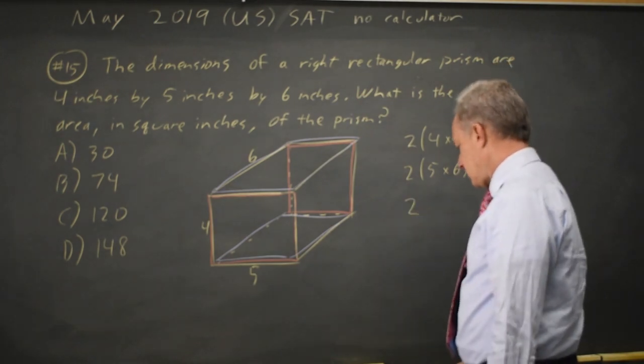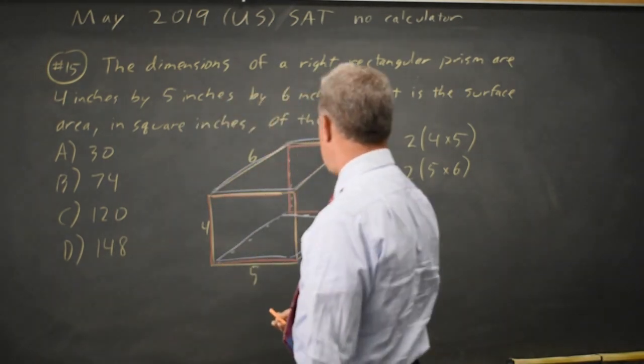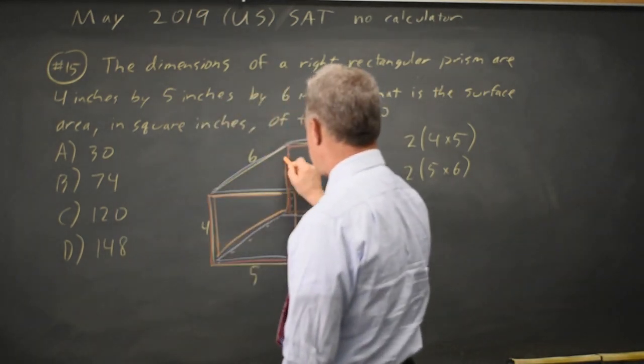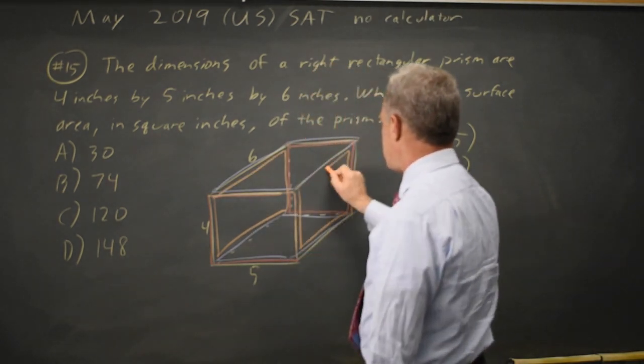And two sides, the left and right as I've drawn it, are 4 by 6. So this rectangle is 4 by 6 and this rectangle is 4 by 6.